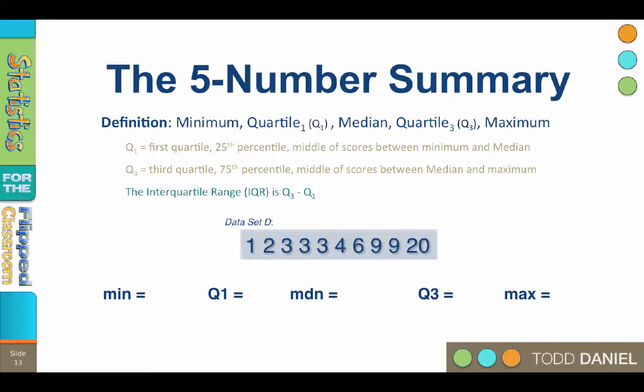The minimum is the smallest number in the data set. The maximum is the largest number in the data set. The median is calculated using a median split as we have done before.